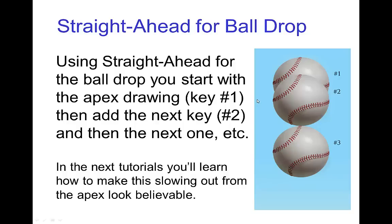For the ball drop, the idea in straight ahead animation would be to start from the apex drawing. If shooting on twos, you'd pick the next drawing two frames later, and then after establishing where that one is, go to the third drawing, and so forth.